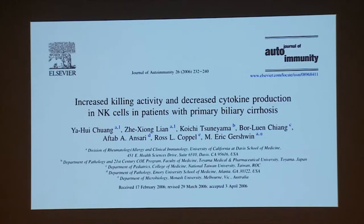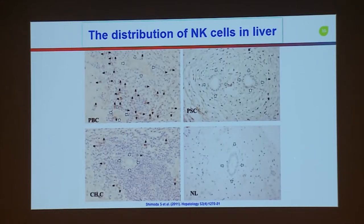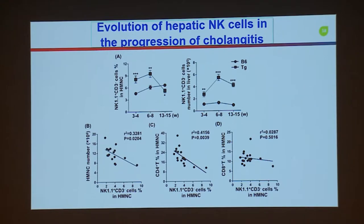In 2006, we published a paper on NK cells in patients. Dr. Shimoda also did a lot of work on NK studies in PBC. We found peripheral NK cells have increased killing activity, and in the PBC liver we can detect a lot of NK cells. In PBC we can also find a lot of CD56 bright NK cells. Dr. Shimoda's work published in 2015 showed that in PBC patients, NK cells have some functional differences compared to controls.